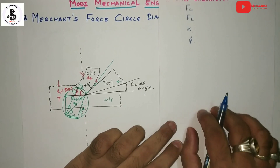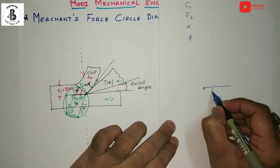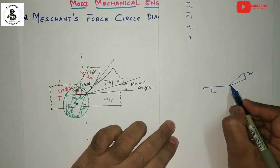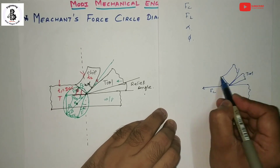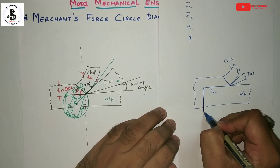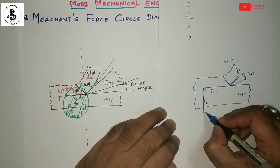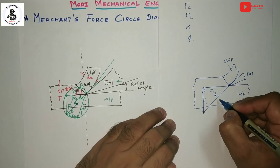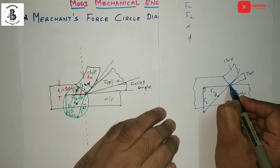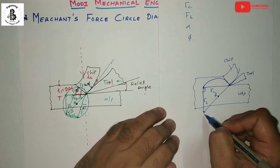Let me repeat the procedure. The cutting force FC starts at the tip of the tool, with the workpiece material here. FC and FT are both from the dynamometer and always at right angles to each other. From FC and FT you get the resultant force; take that as the center, draw the radius up to the tool tip, and make one circle that always passes through both the FC and FT endpoints.